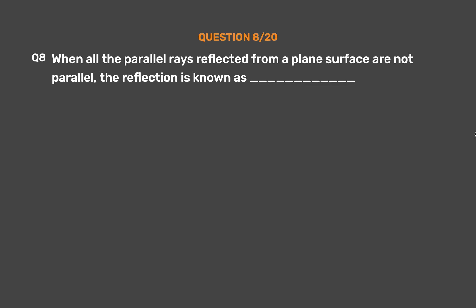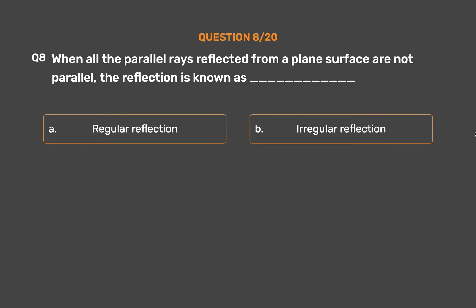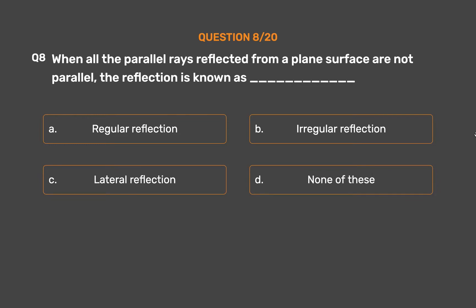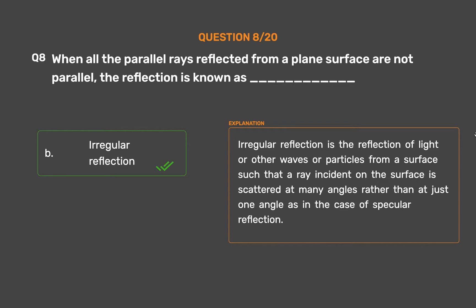Question number 8: When all the parallel rays reflected from a plane surface are not parallel, the reflection is known as — Option A: Regular reflection. Option B: Irregular reflection. Option C: Lateral reflection. Option D: None of these. The correct answer is Option B, Irregular reflection. Irregular reflection is the reflection of light from a surface such that a ray incident on the surface is scattered at many angles rather than at just one angle, as in the case of specular reflection.